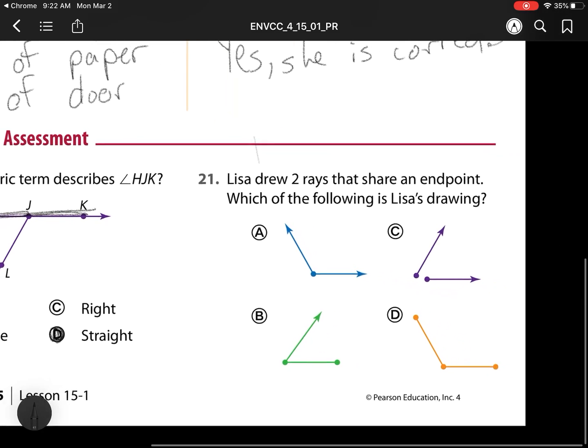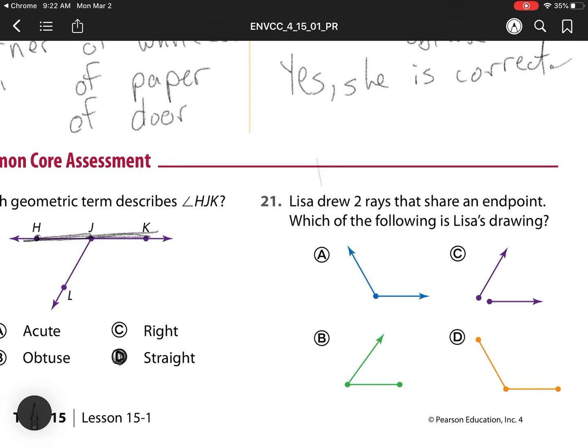Number 21. Lisa drew two rays that share an endpoint. Which of the following is Lisa's drawing? It says that share an endpoint. Right here, these don't share, so it's not C. Now I'm left with this keyword, rays. She has two of them. I need to have two that have arrows on the end, because that means it goes on forever. Here there's no arrow there, so it's not B. Here neither one of these are rays. They're both line segments. So all I'm left with is A.